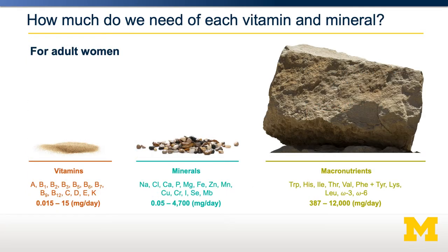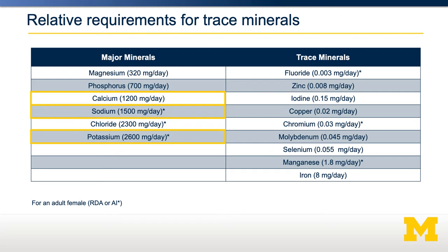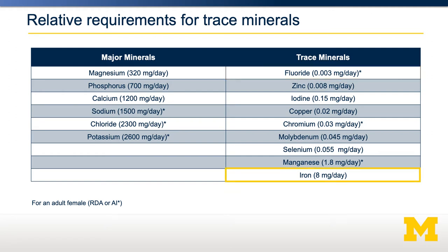So how much of these do we need? The requirements of minerals span a pretty wide range. Generally we require more of them than we require for vitamins, but quite a bit less than for the essential amino acids or omega-3 and omega-6 fatty acids. Major minerals such as calcium, sodium, or potassium are required somewhere between 0.3 and 2.6 milligrams per day for an adult female. However, trace minerals are required at much lower amounts — for example, fluoride is only required at 3 micrograms per day, a vanishingly tiny amount. This ranges up to iron, which is required at 8 milligrams per day. The requirements for any individual trace mineral depend on what biological processes it helps with and how effectively we absorb it from our diet.